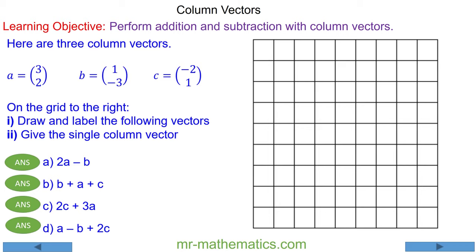Hello, in this lesson we're going to perform addition and subtraction with column vectors. To begin with, a column vector describes a horizontal and a vertical translation. When the number on top is negative we move to the left, and when it is positive we move to the right. Below it, we move up when it is positive and down when it is negative.